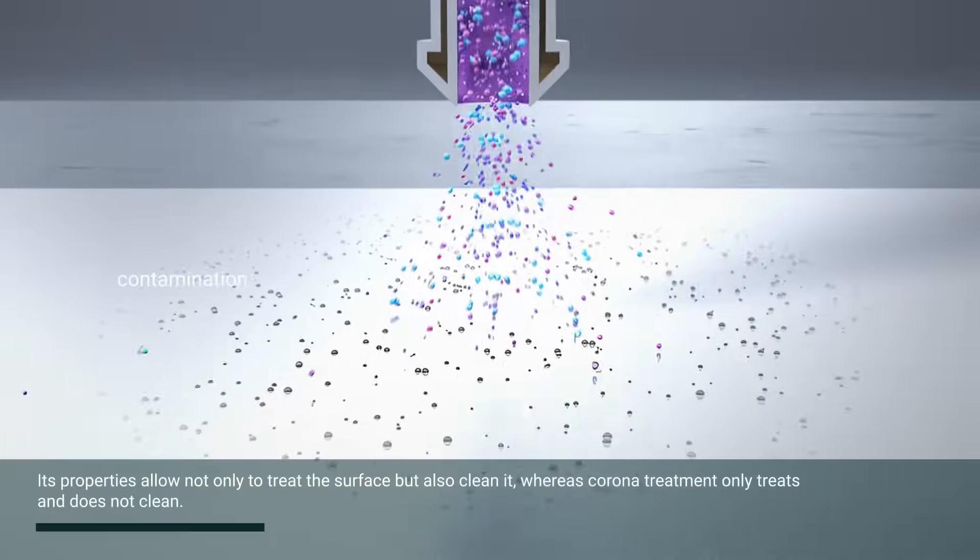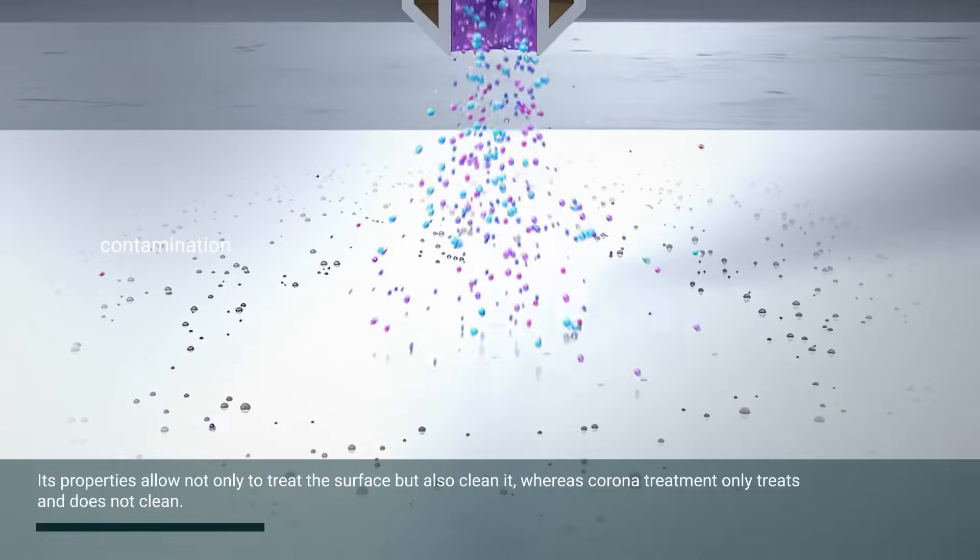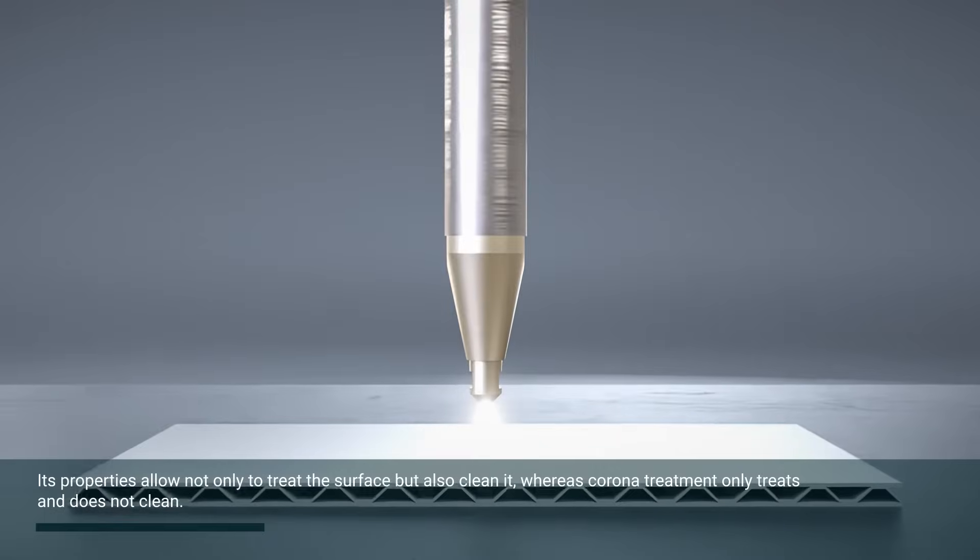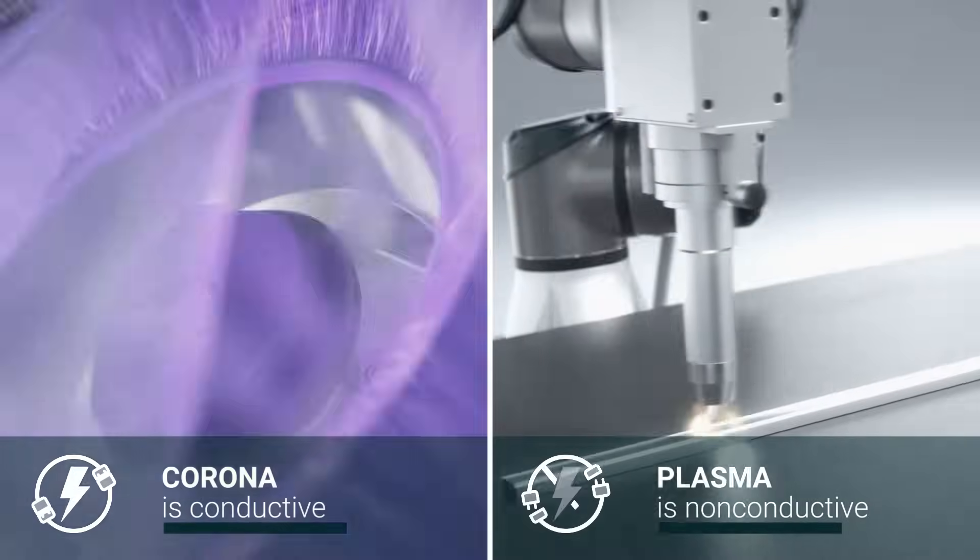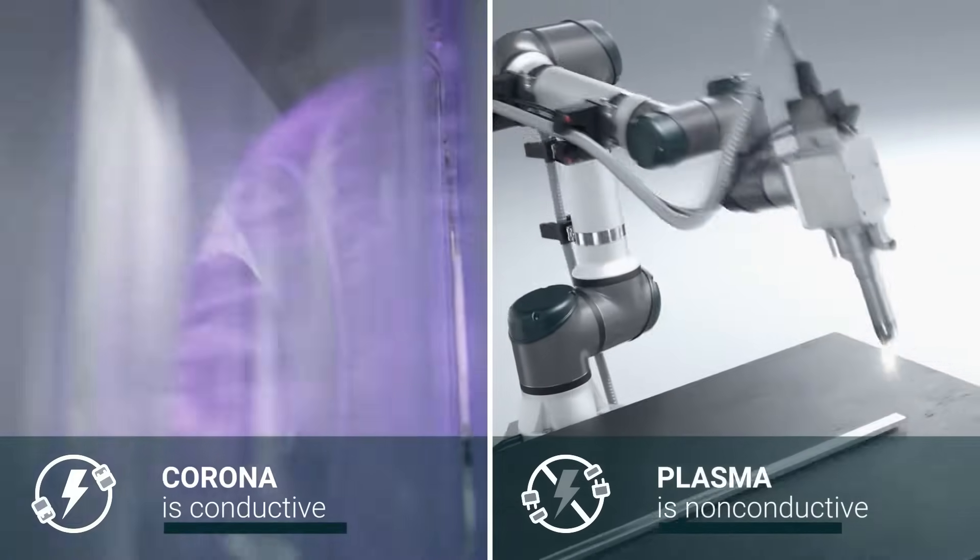Its properties allow not only to treat the surface but also clean it, whereas corona treatment only treats and does not clean. Corona also has an electrical potential in the discharge, while plasma is generally a non-conductive ionized gas.